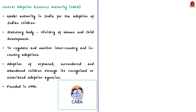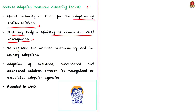Finally, let us see a few facts about the Central Adoption Resource Agency, that is CARA. The Central Adoption Resource Agency is a nodal institute in India for the adoption of Indian children. It is a statutory body functioning under the Ministry of Women and Child Development. It is authorized to regulate and monitor inter-country and in-country adoption.